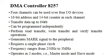The 8257 DMA is a four-channel direct memory access controller. It has four channels which can be used for four I/O devices. Each channel has a 16-bit address and a 14-bit counter. Each channel can transfer data up to 64 kilobytes and can be programmed independently. Each channel can perform read transfer, write transfer, and verify transfer operations.